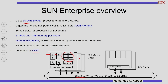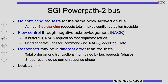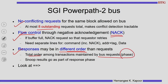That gives you a feel of how these processors are. Now we go back to the technicalities of the split transaction bus. The SGI PowerPath 2 bus is a split transaction bus that takes 8 outstanding requests at a time. It handles flow control by giving a NAC — negative acknowledgement — meaning if the buffer is full it refuses to take further requests. Responses are in a different order than the requests, and the total order is maintained by the bus request phase: as soon as you request, you have serialized the transaction.